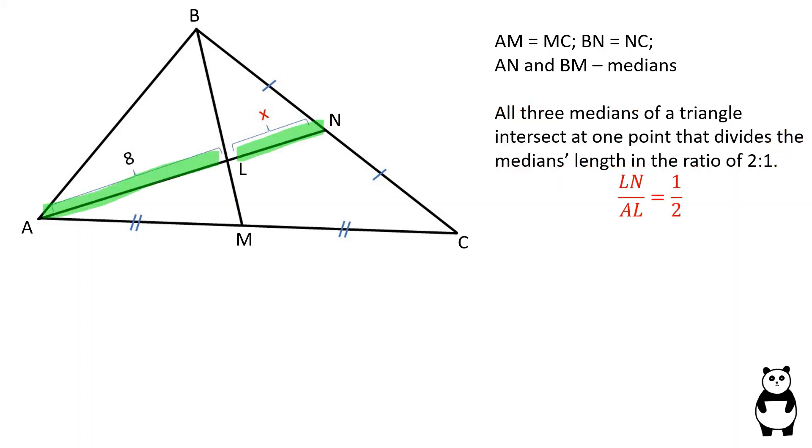LN over AL is equal to 1 over 2, and since AL is equal to 8, LN is 4.